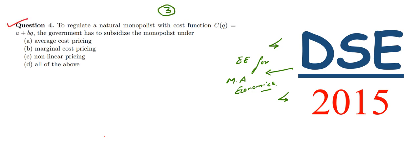Question 4 says: to regulate a natural monopolist with cost function C(q) = a + bq, the government has to subsidize the monopolist under—we need to find for regulating this natural monopolist whose cost function is C(q) = a + bq, under which pricing should the government subsidize the monopolist.